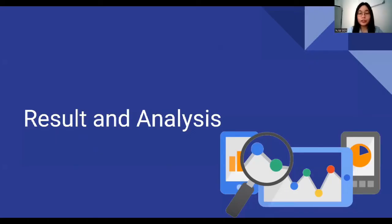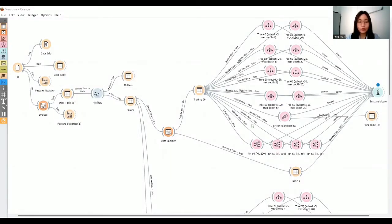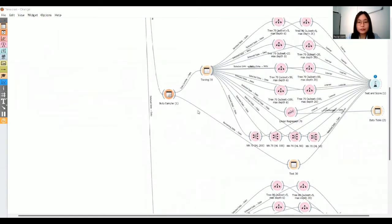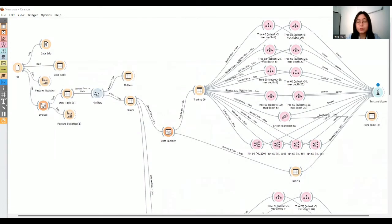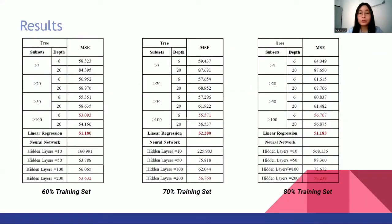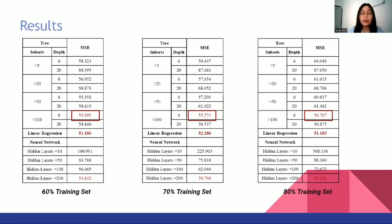We use Orange to develop the predictive models. After undergoing the KDD process, we sample the data with the Data Sampler widget in three proportions — 60%, 70%, and 80% training sets — and develop the decision tree, linear regression, and neural network models for each proportion. From the results tables, the best parameter for the decision tree model across all sample sets is a minimum subset of 100 and a maximum tree depth of 6, yielding the lowest mean square errors of 53.093, 55.571, and 56.767 respectively. We conclude that a higher minimum subset split combined with a lower maximum depth produces a lower mean square error.